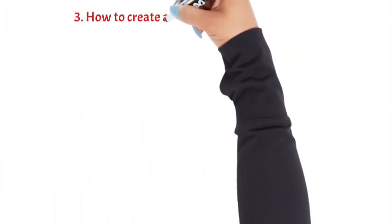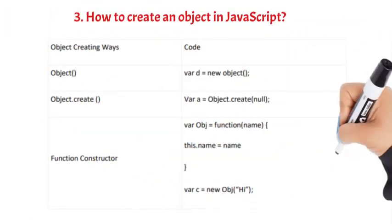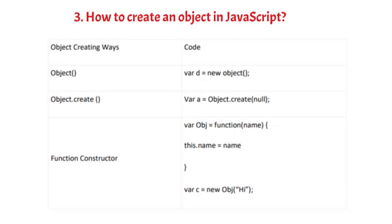Question 3: How to create an object in JavaScript. Objects are the building blocks of modern JavaScript and are more of a reference data type. 1. Object literal: obj = new Object(). 2. Object.create: var obj = Object.create(null). 3. Function constructor: var avj = function(name) { this.name = name; }; var c = new Object().